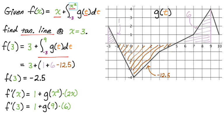So you just go along the x-axis to nine, you go up to the function, and you get that point right there. So that's at four. So f'(3) is going to be one plus four times six, which is definitely 25. And so now I know the slope is 25, I know the point is three comma negative 2.5.